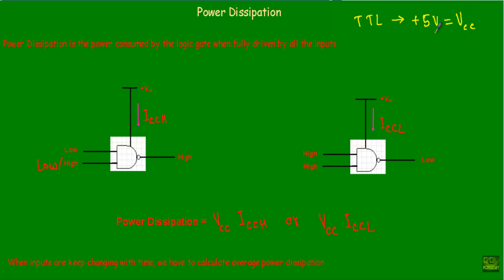All logic gates draw current from this DC supply voltage to perform normal operation. Let's say I denote that current as ICC. Since we are dealing with DC voltage and DC current, I can calculate power as PDC = VCC × ICC. Power dissipation is the power consumed by the logic gate when fully driven by all the inputs.